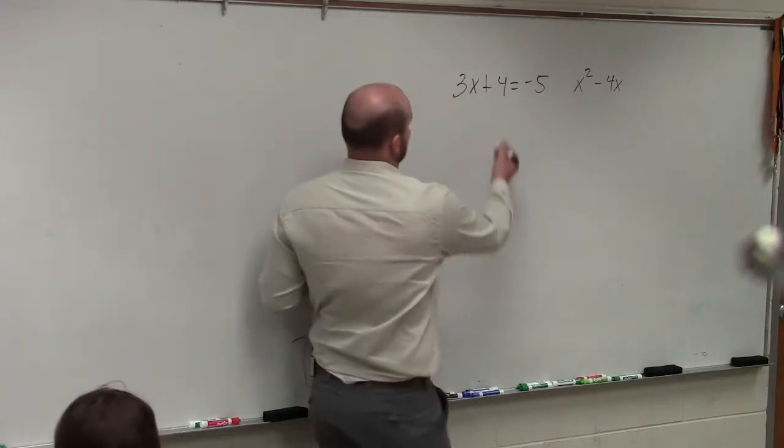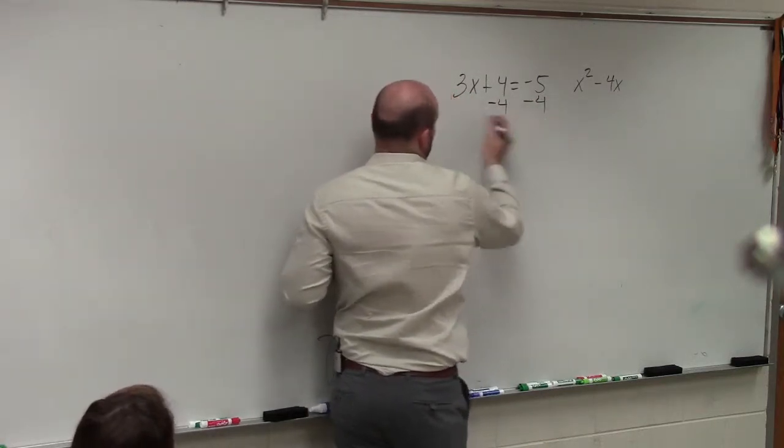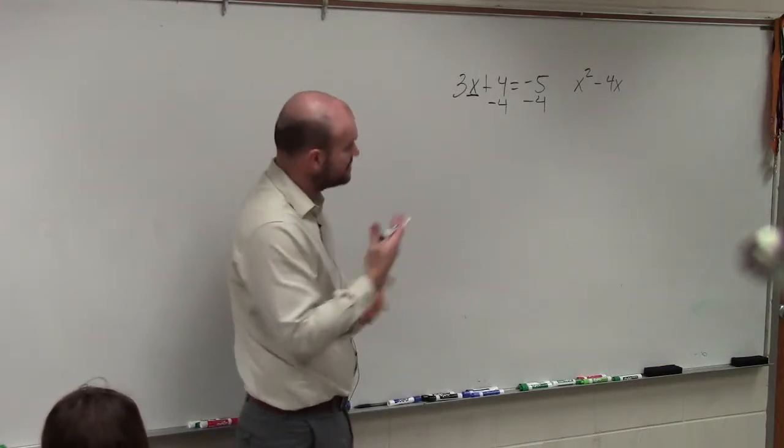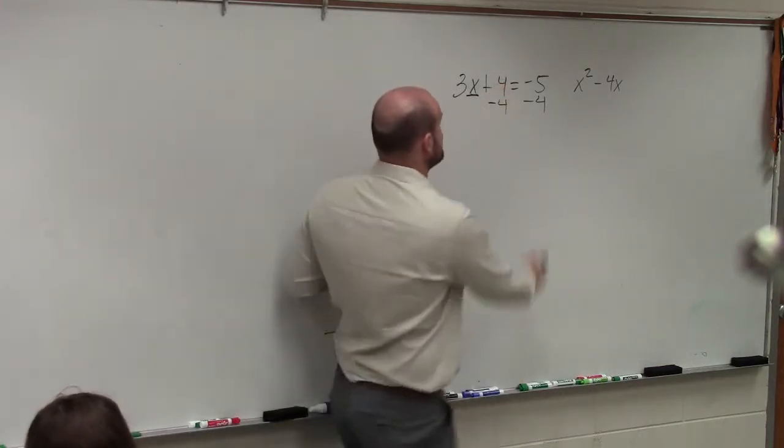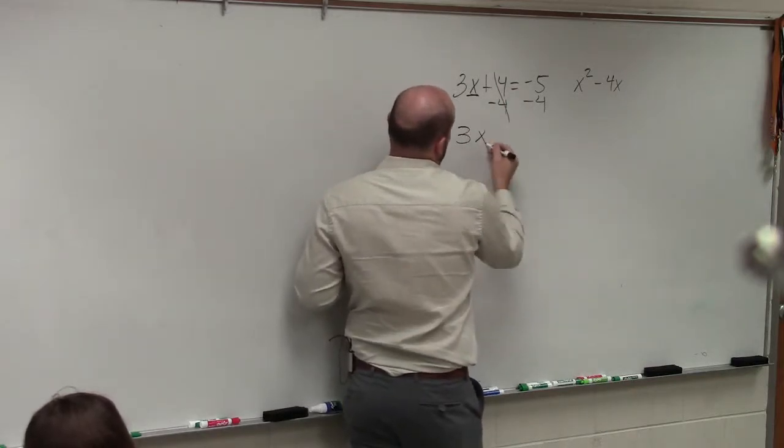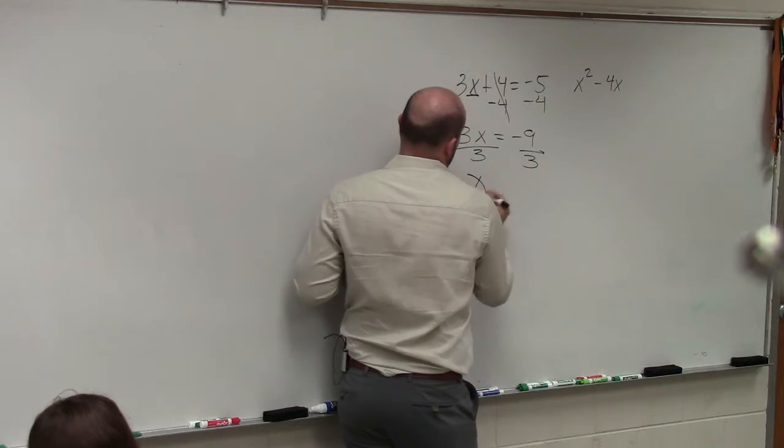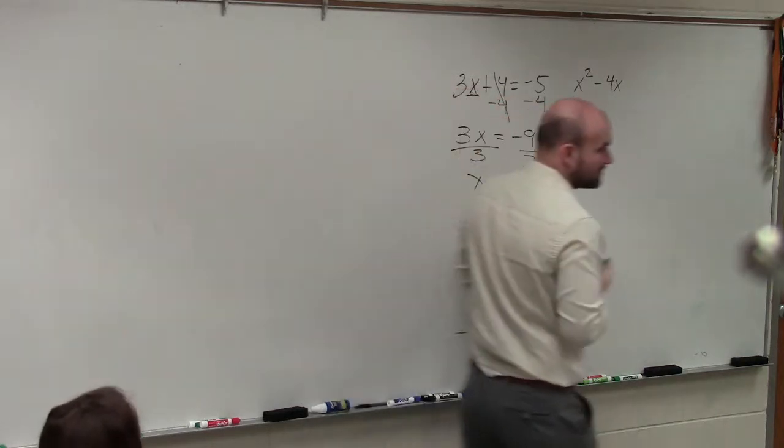So to do that, first thing we need to do is subtract 4, right? So we need to solve for x. So we're going to isolate the x. So we need to undo what's happening to it. So the first thing we always do is undo addition and subtraction to our variable. Then I have 3x is equal to negative 9, divide by 3, divide by 3, x is equal to negative 3.